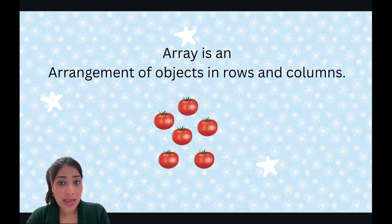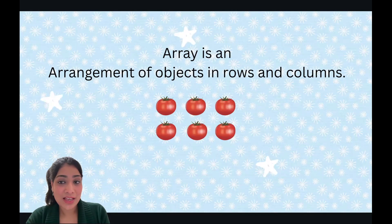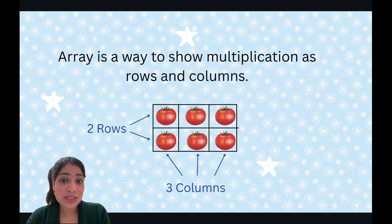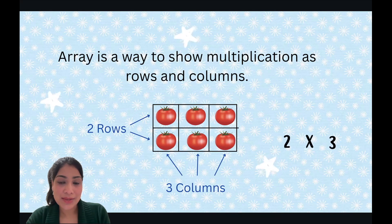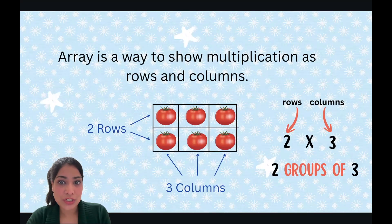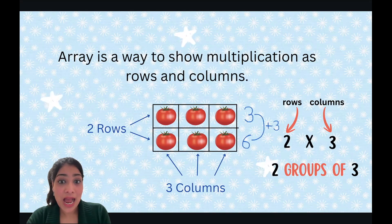Like you have these tomatoes and you arrange them like this. How many rows are there? Two rows. And how many columns? Three columns, right. And we can use these rows and columns to show multiplications. Two times three, where two is the number of rows and three is the number of columns. So this is called two rows of three tomatoes, or what we have learned in equal groups, two groups of three. And now we can use our repeated additions to calculate total tomatoes. So three plus three is six tomatoes.